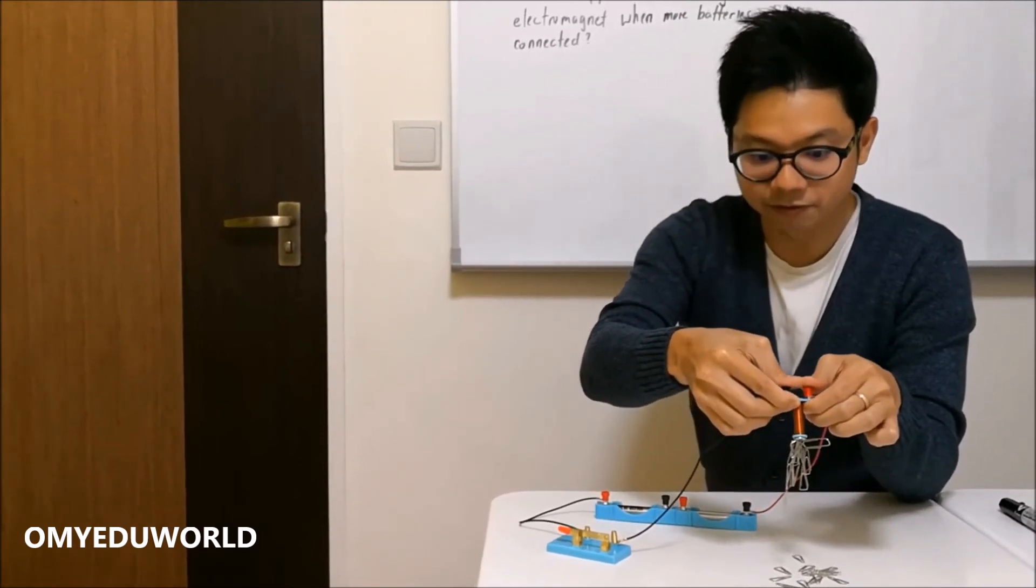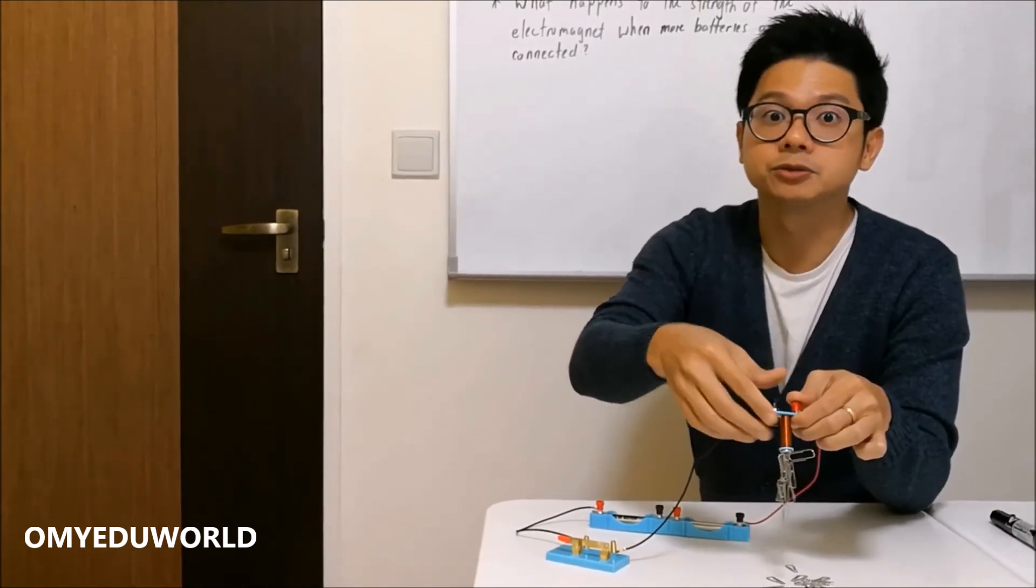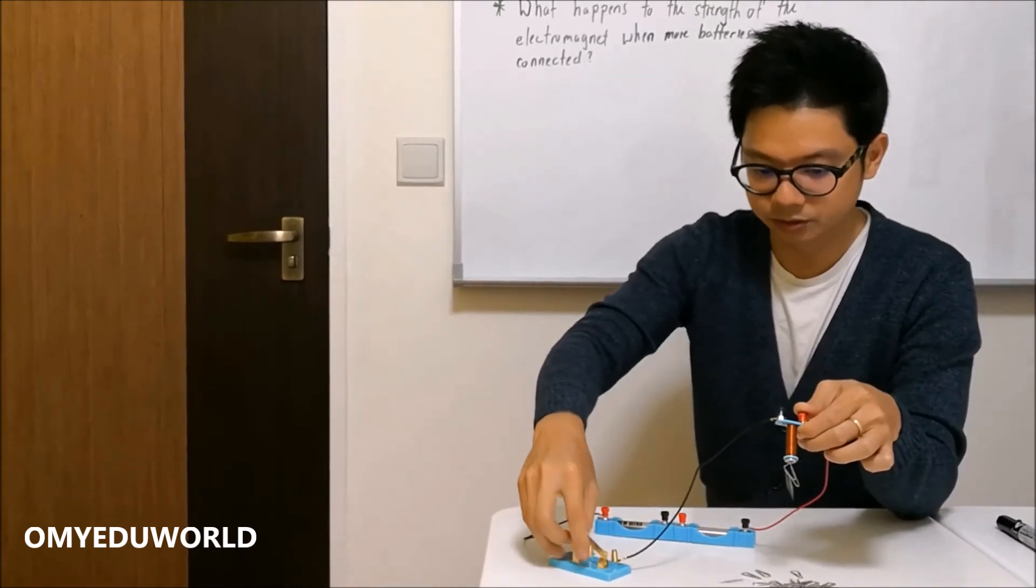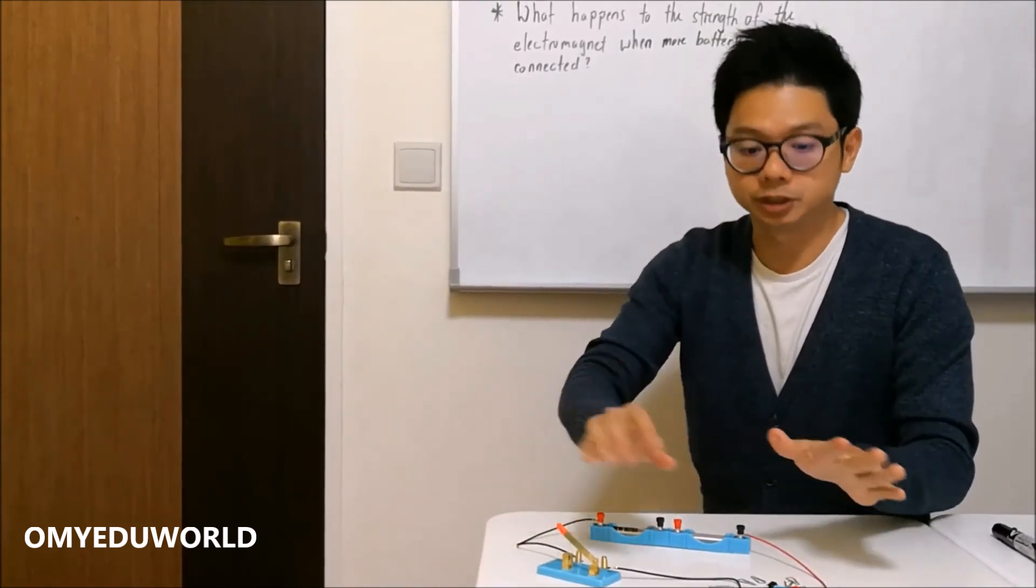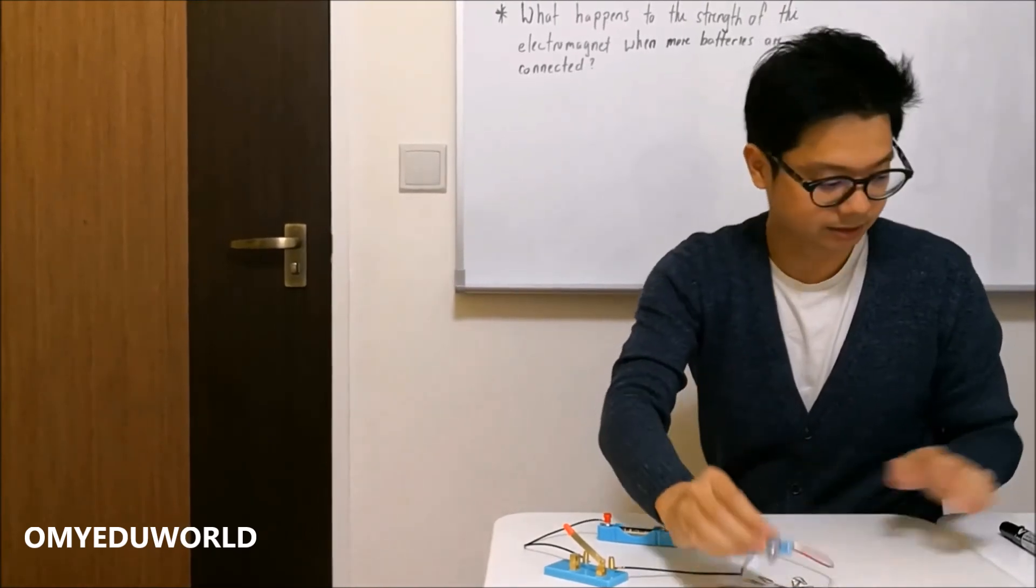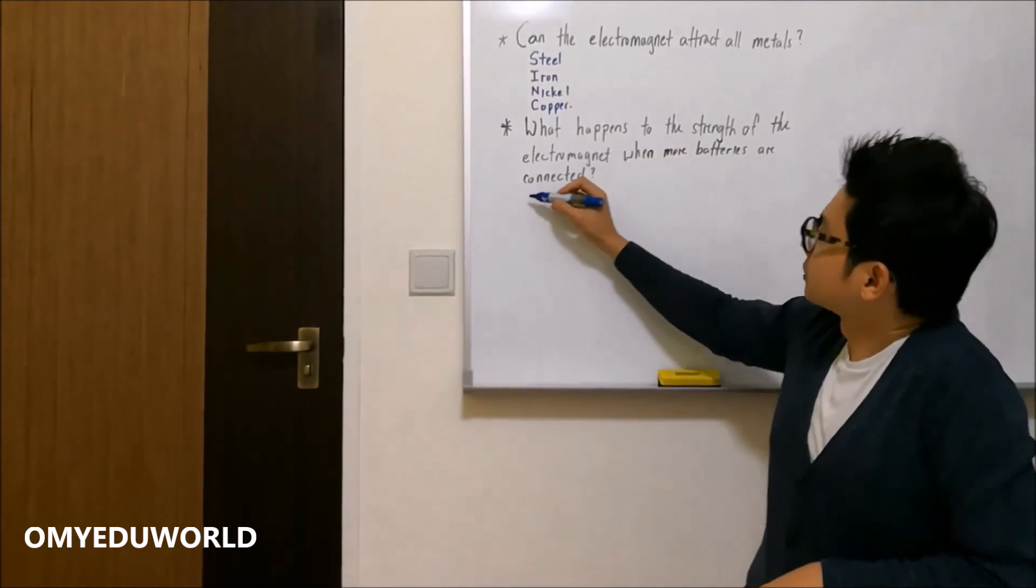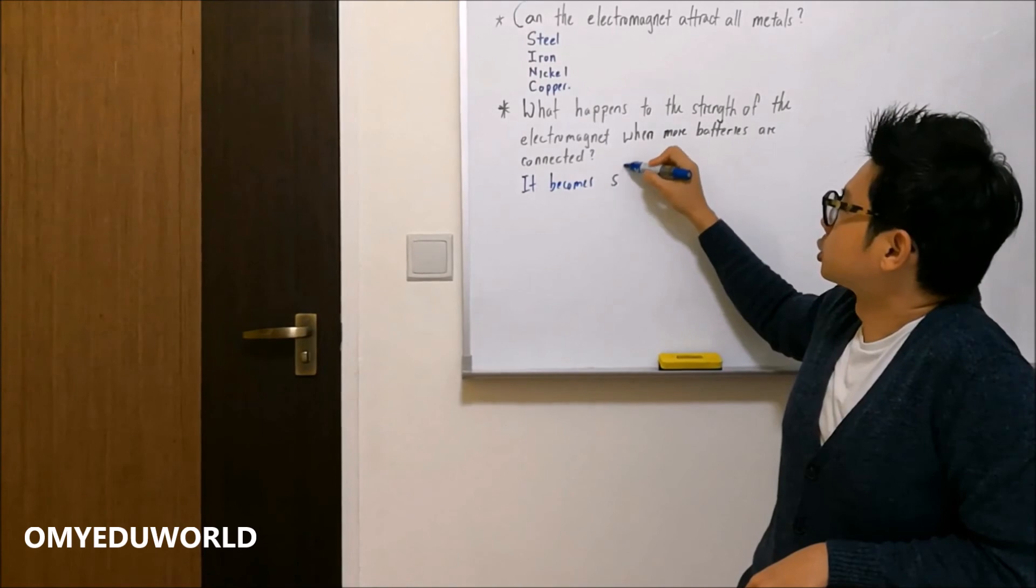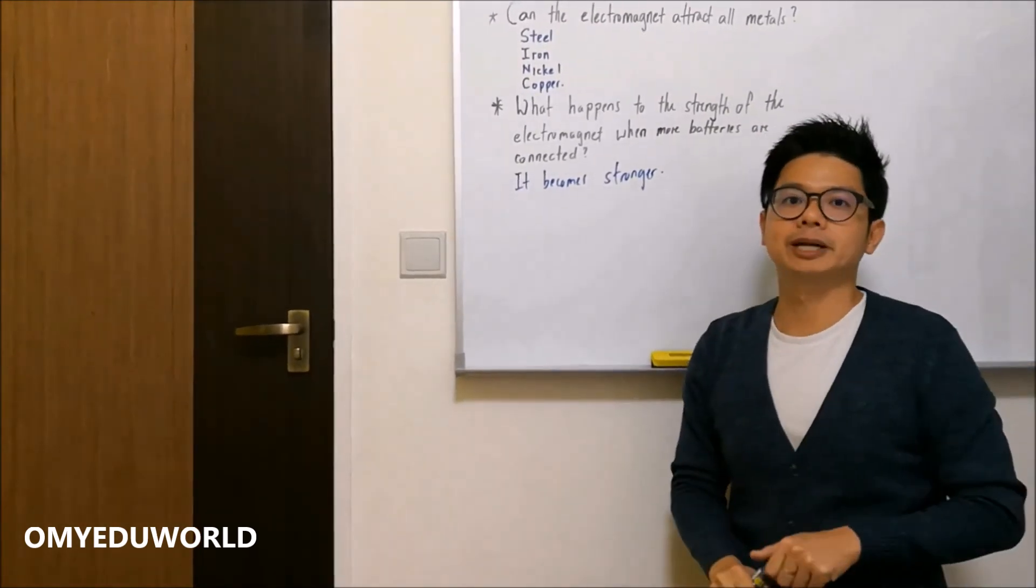Can you see that it's quite obvious it's picking up much more paper clips compared to when you only connect with one battery? So remember, after a while, remember to open the switch because this will heat up. So to answer this question: what happens to the strength? It becomes stronger. And that's it about electromagnets.